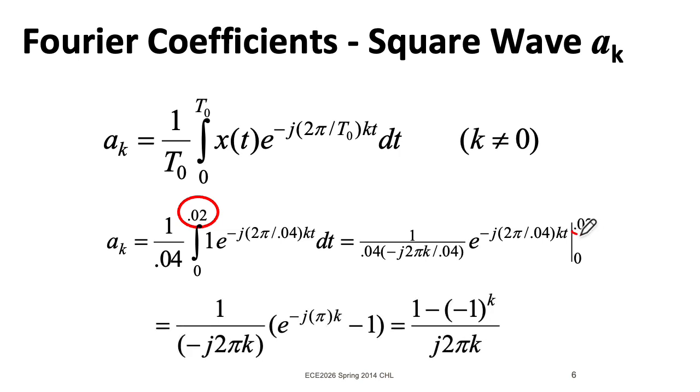So to perform the definite integral, we need to plug in 0.02 for t. And when we do that, we get this e to the minus jπk term. And then for the lower limit, we plug in 0 for t. That just gives us 1. Notice, e to the minus jπ is the same thing as minus 1. And I can take this minus sign here and distribute it through to write 1 minus minus 1 to the power of k. Now this minus 1 to the k, this is going to be 1 for even k and minus 1 for odd k.